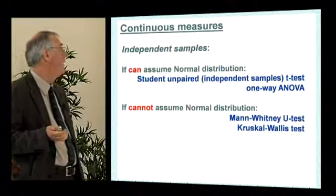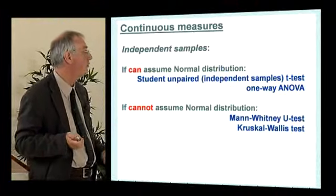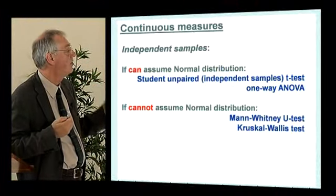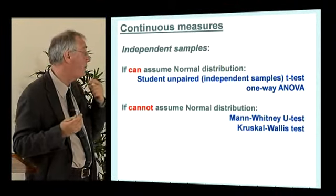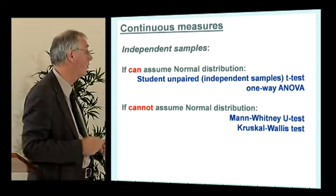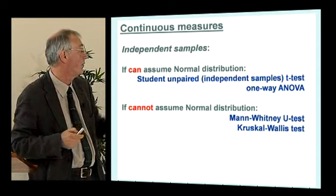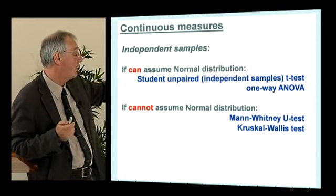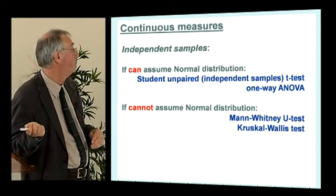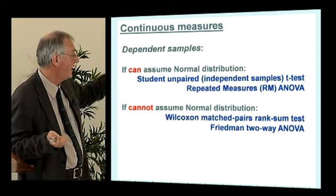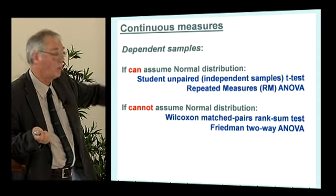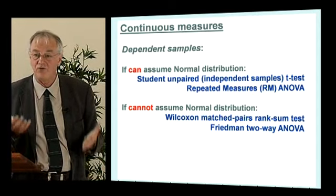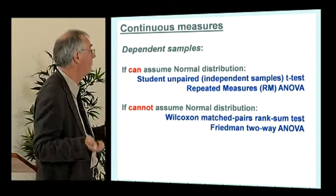For continuous measures with independent samples and a normal distribution, use the Student unpaired t-test for two groups, going up to one-way ANOVA for more than two groups. If you can't assume a normal distribution, the equivalents are the Mann-Whitney and Kruskal-Wallis tests. For dependent samples with normal distribution, use the Student paired t-test or repeated measures ANOVA; for non-normal, it's the Wilcoxon and Friedman tests. If you can't remember them all, you just have to go to the next question.